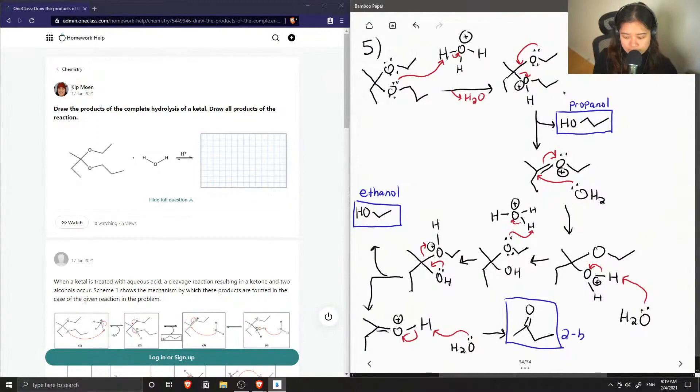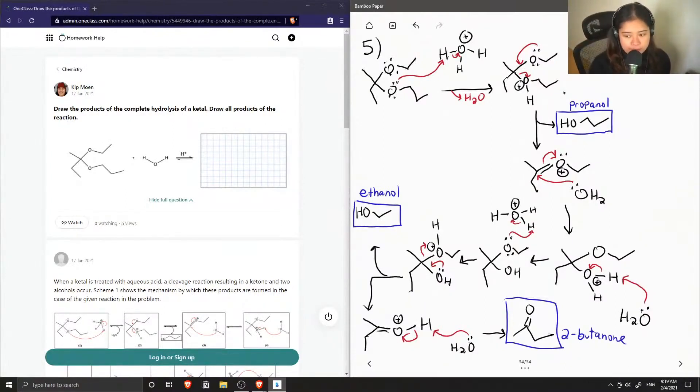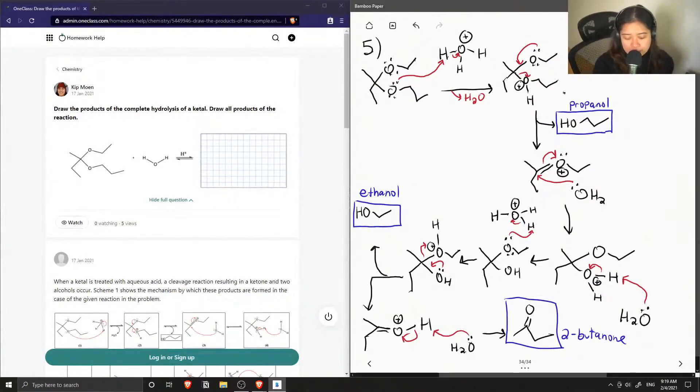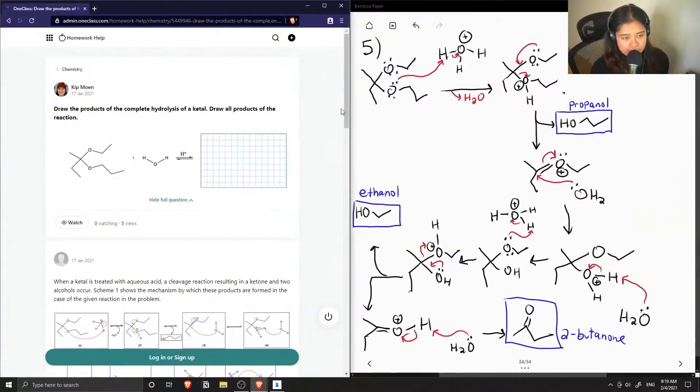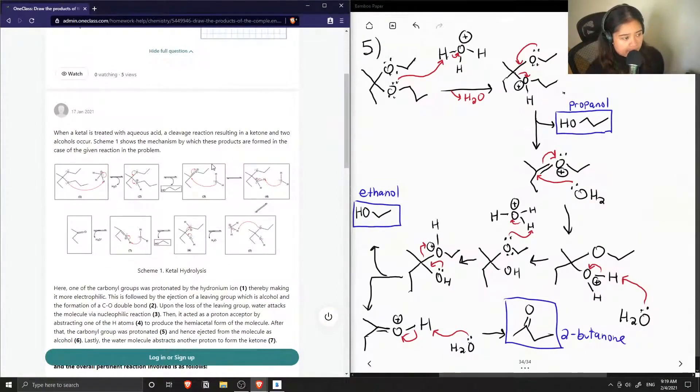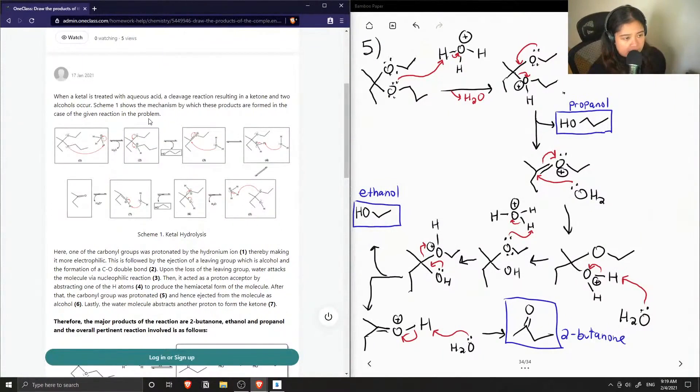So this is 2-butanone, which results in a ketone and two alcohols.